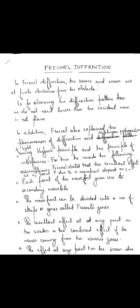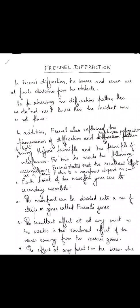Fresnel wanted to find out the resultant effect due to a wavefront at a point P. There is a plane wavefront, and we have to find the resultant effect of this wavefront at a point P. To find that, Fresnel made some assumptions.